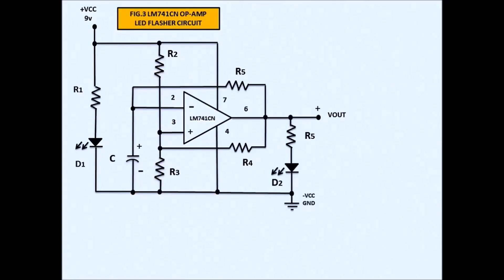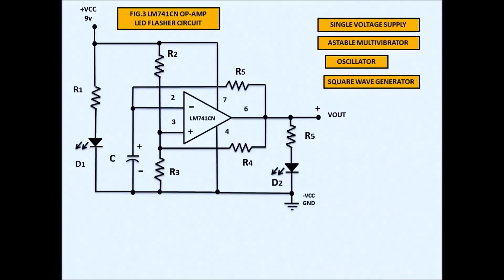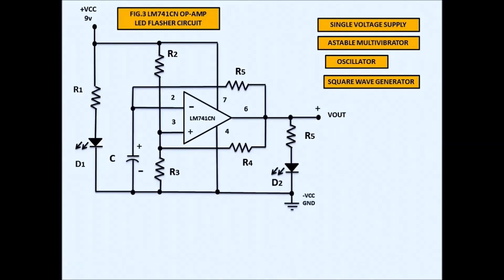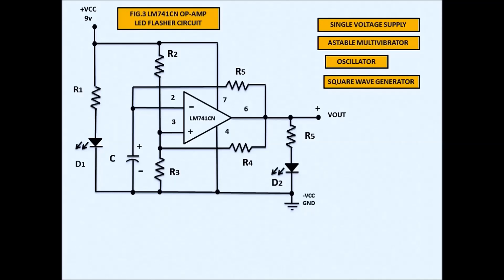We now come to the LED flasher circuit. In this circuit we are using a single voltage supply, meaning negative VCC and ground are the same. This circuit functions as an astable multivibrator — it keeps changing its output, so it has no stable state. It functions as an oscillator, switching back and forth. This is a square wave generator.